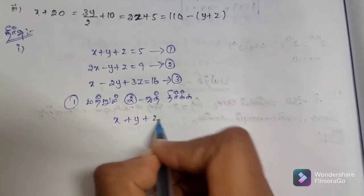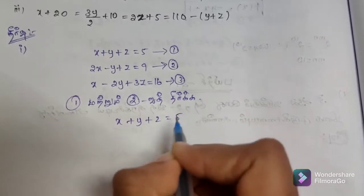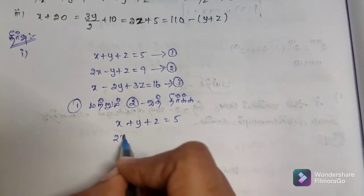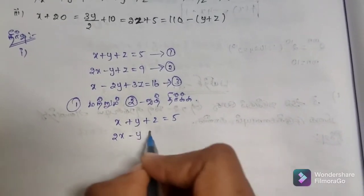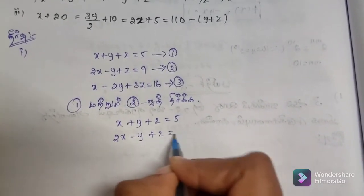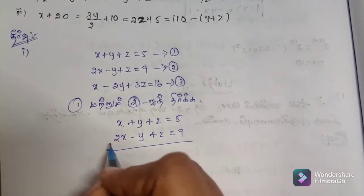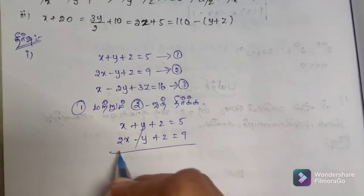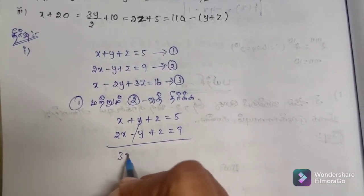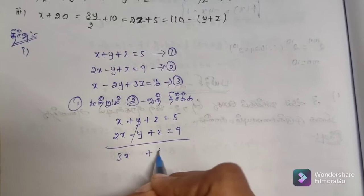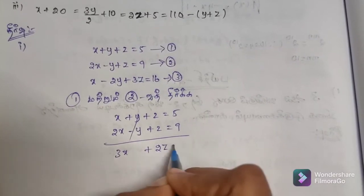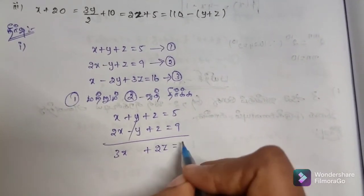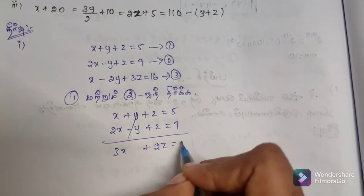x plus y plus z is equal to 5, and 2x minus y plus z is equal to 9. Adding these together: 3x plus 2z is equal to 14.